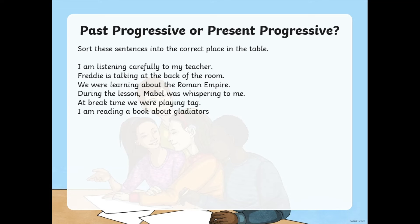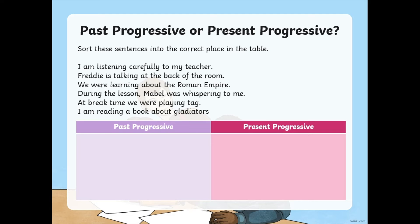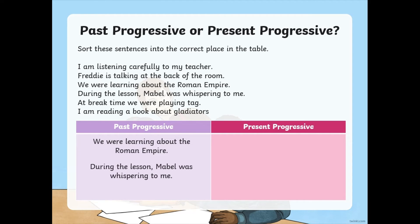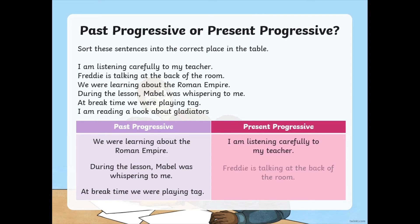Remember: present progressive uses am, are, or is; past progressive uses was or were. Let's look at these sentences: 'I am listening carefully to my teacher. Freddie is talking at the back of the room. We were learning about the Roman Empire. During the lesson, Mabel was whispering to me. At break time, we were playing tag. I am reading a book about gladiators.' The past progressive ones — look for was or were — are: 'We were learning', 'Mabel was whispering', and 'we were playing tag.' The present progressive ones using am or is are: 'I am listening', 'Freddie is talking', and 'I am reading.' Present progressive is an ongoing event happening as we write or speak.